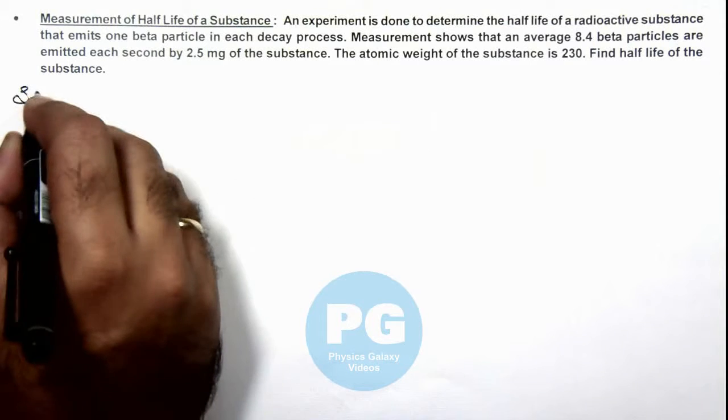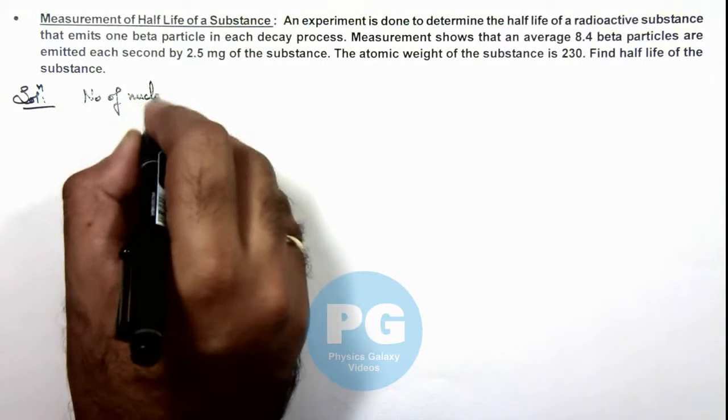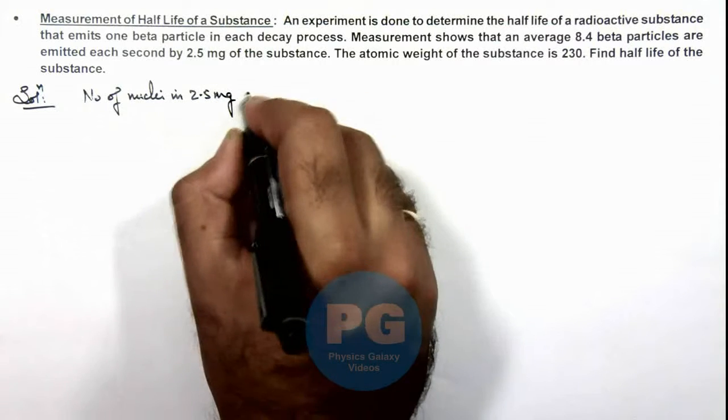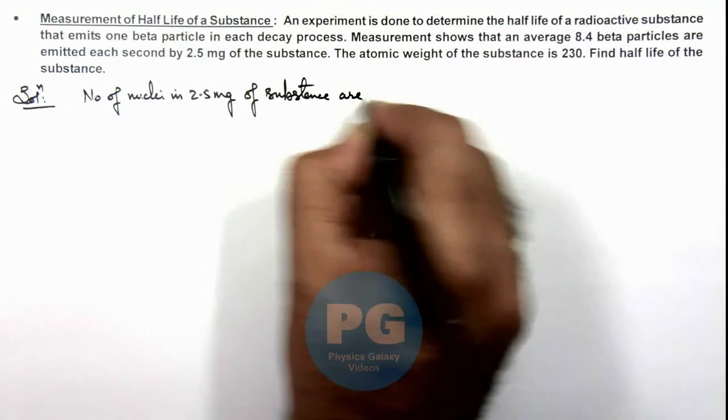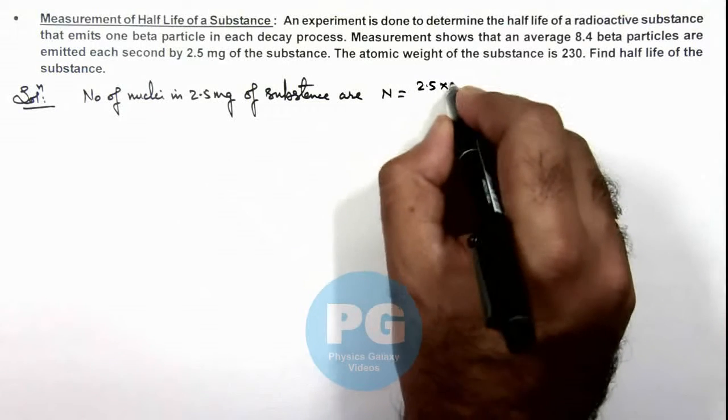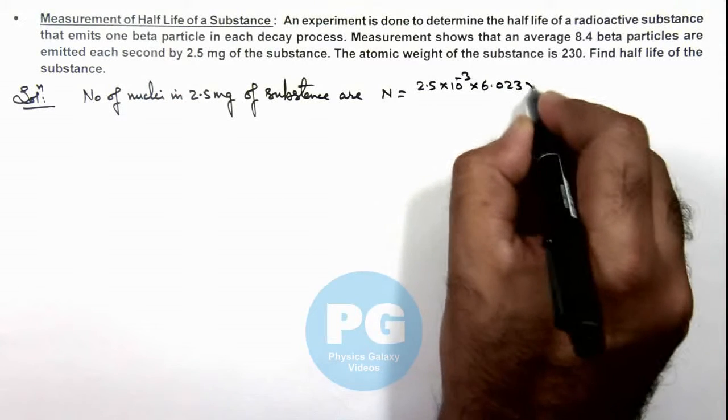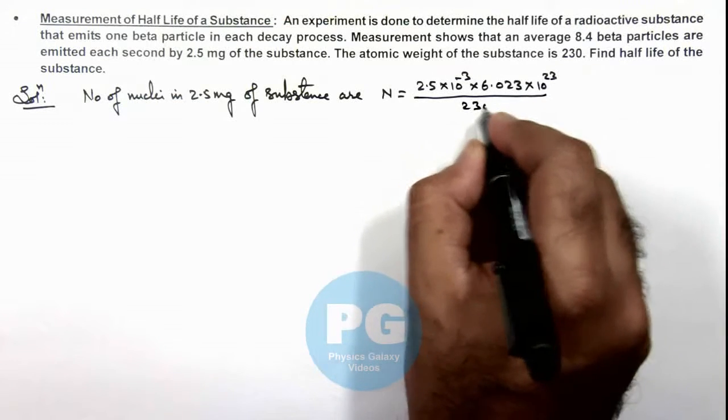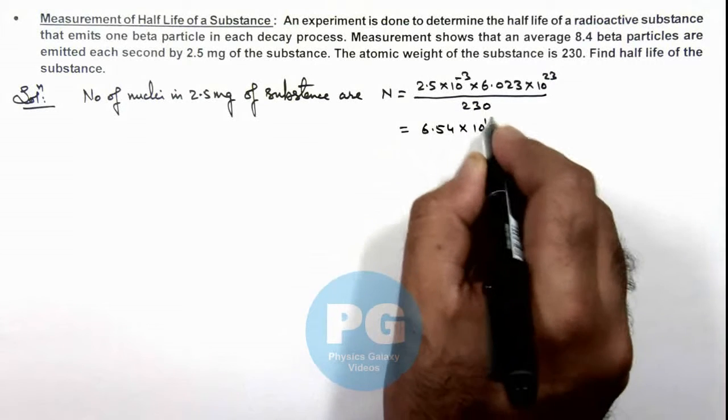First, if we calculate the number of atoms or number of nuclei in 2.5 milligrams of substance, we can calculate this number of atoms as 2.5 milligrams, which is 2.5 × 10^-3, multiplied by Avogadro's number, divided by the atomic mass 230. On simplifying this we'll get 6.54 × 10^18 atoms.